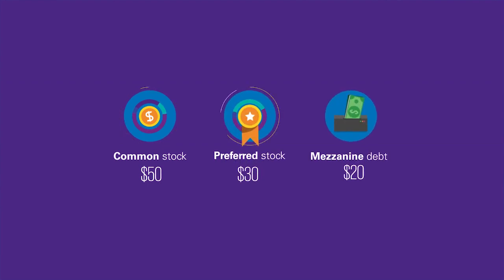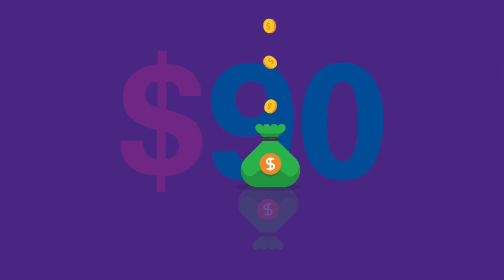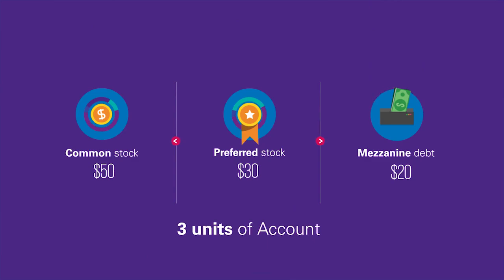Alternatively, if the value of the bundle sold together was $90, then it would be in the economic best interest of the seller to sell the three individual securities separately. So you would state the fair value of each position separately, and you would have three units of account.